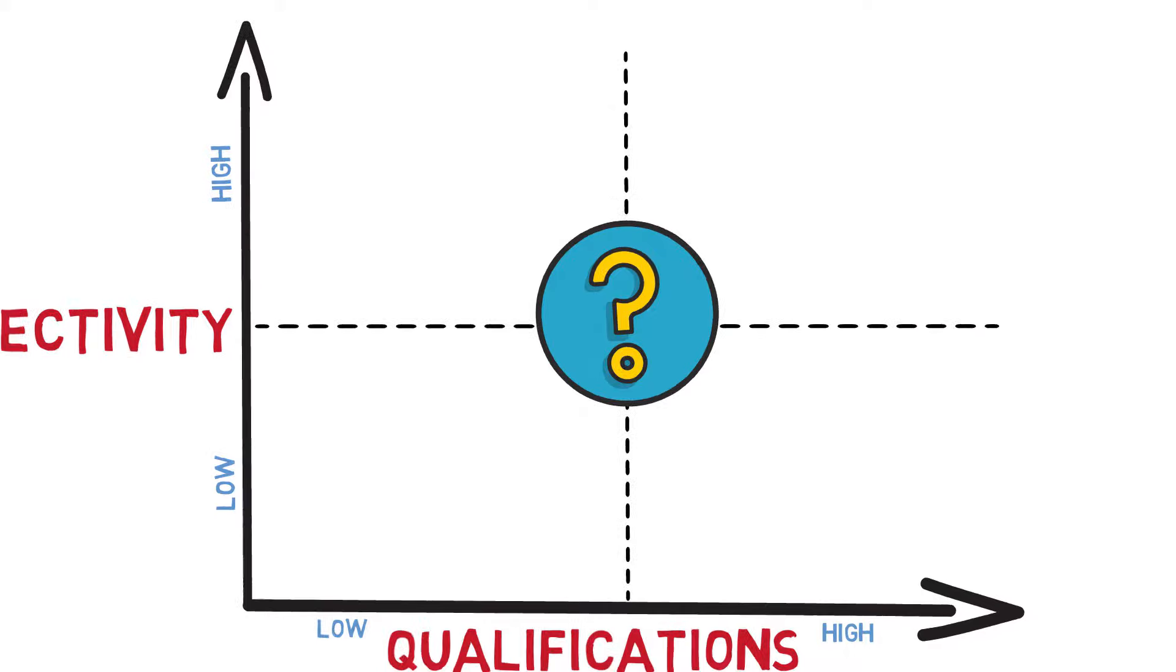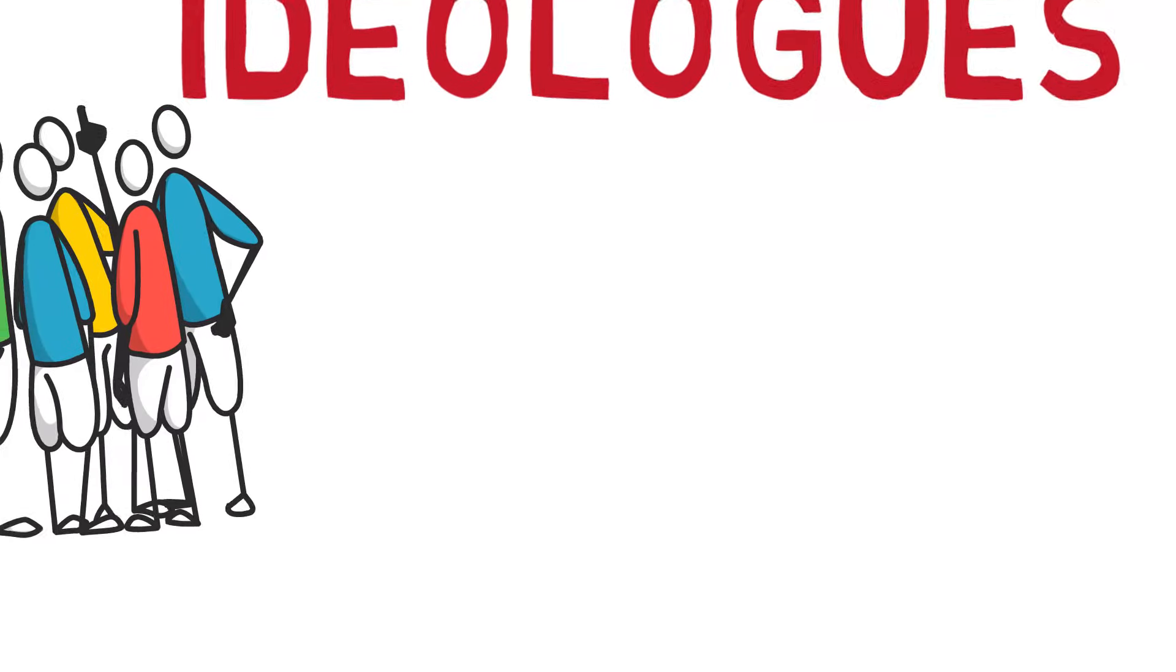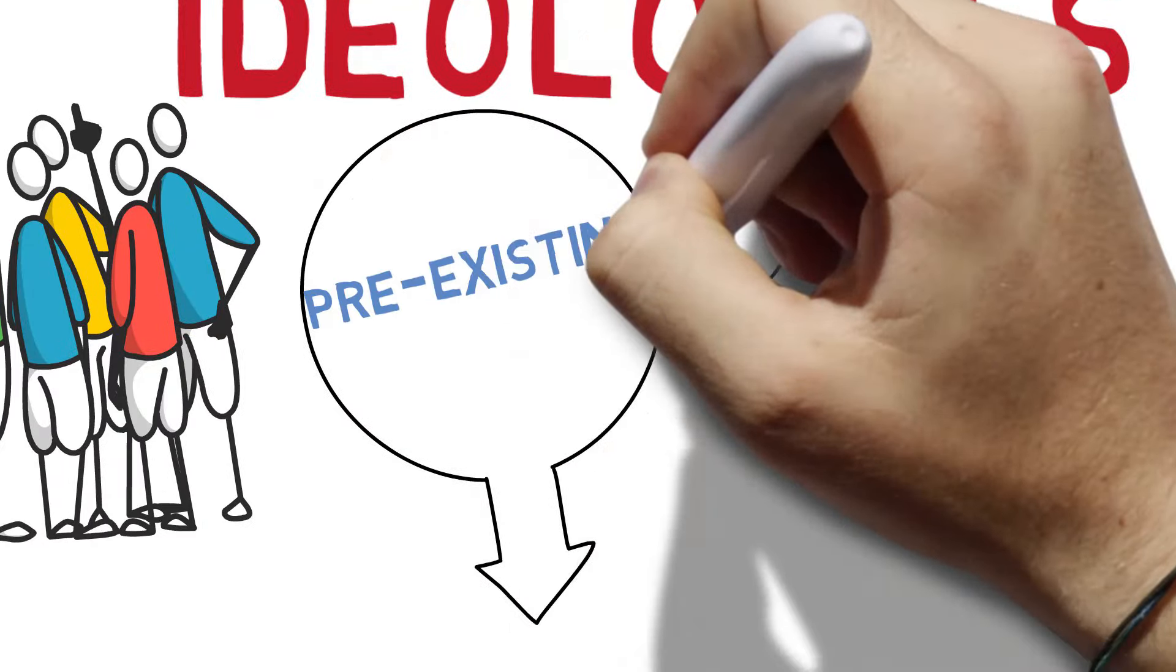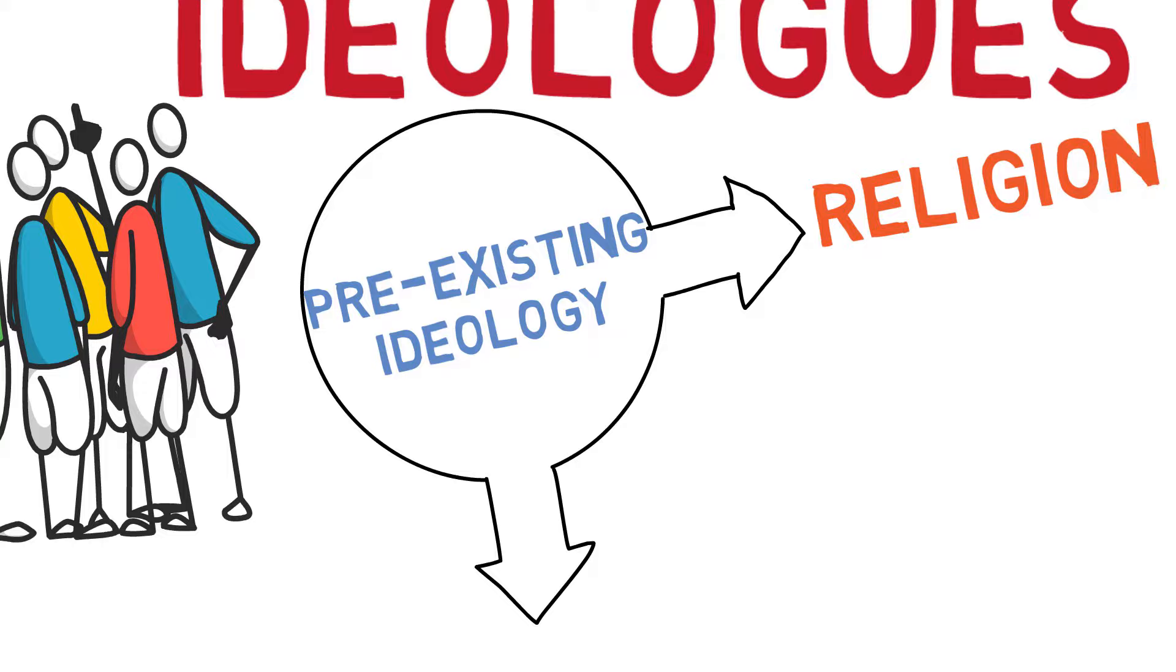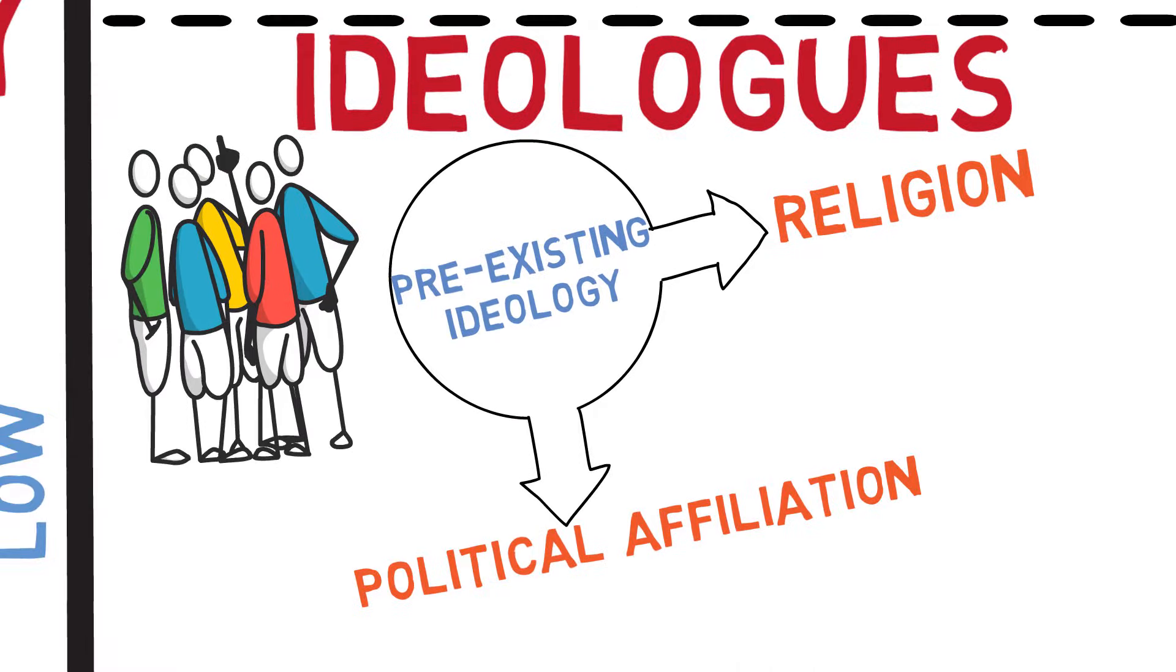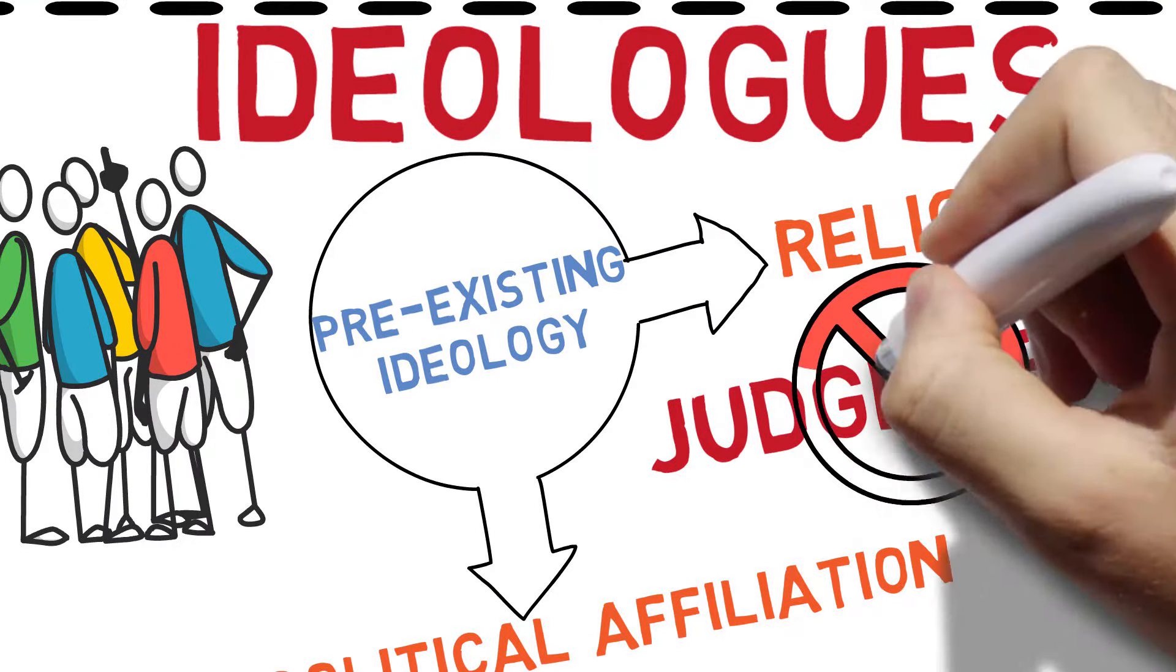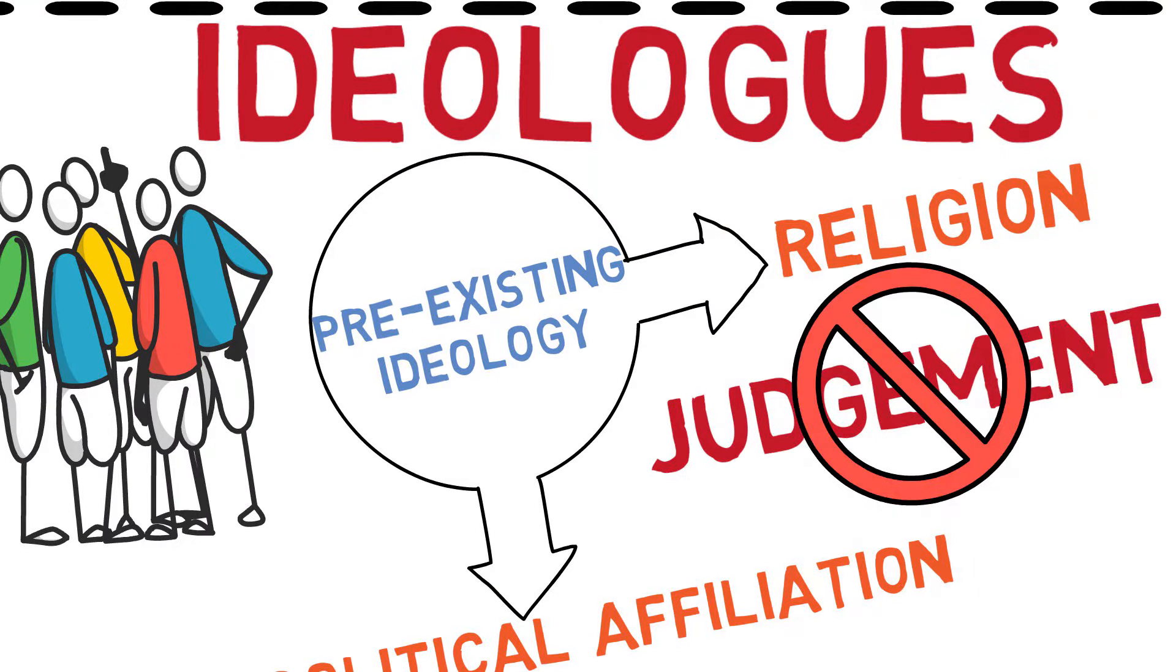Let's start at the bottom on the left. Here we've got the ideologues. These are people who take a position on a subject because of some pre-existing ideology. It could be their religion, it could be their political affiliation. Look, we're all very tribal and we're all predisposed to adopting beliefs that are held by a group of people from whom we'd like acceptance. So no judgment here, on some issue or another, we all probably fall into this quadrant.